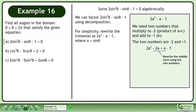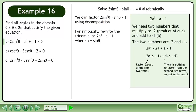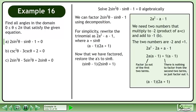We write the middle term using the two numbers, giving us 2a² - 2a + a - 1. Factor 2a out of the first two terms. There is nothing to factor from the second two terms, so just factor out 1. The factored form is (a - 1)(2a + 1). Now that we have factored, restore the a's to sinθ, giving us (sinθ - 1)(2sinθ + 1).